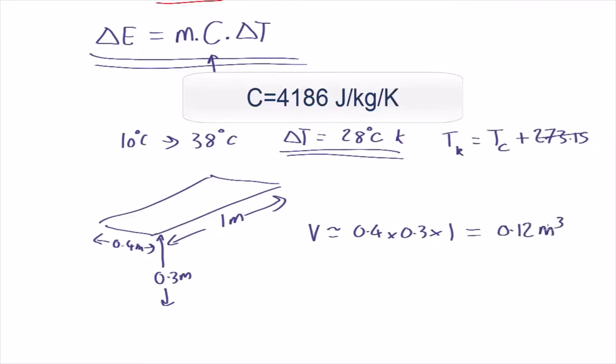So the volume is going to be roughly 0.4 times 0.3 times 1, which is equal to 0.12 cubic metres. That's the volume of water, but what we need up here is the mass of water. So the mass is just equal to the volume times the density. Density of water is by definition 1000 kilograms per cubic metre. You can look that up again. So that equals 0.12 times 1000 equals 120 kilograms.